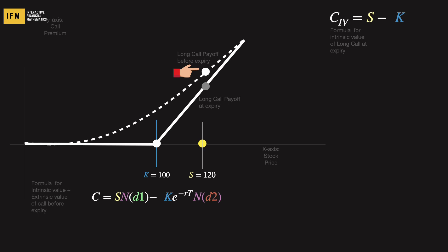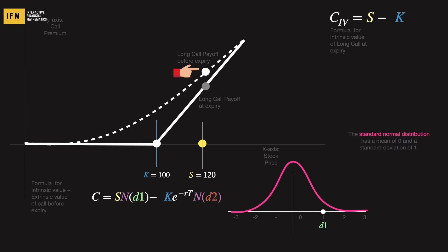To start, let's understand d1 and N(d1). For this, we need to grasp the concept of the standard normal distribution, which is a normal distribution with a mean of 0 and standard deviation of 1. First, let's plot it — draw the axis and label the standard deviations on the x-axis. The shape of the standard normal distribution resembles a bell curve. If we take a point, say d1, on the x-axis and find the corresponding value on the bell curve, we get the height of the distribution at that d1 value. The standard normal cumulative distribution function, N(d1), is given by the integral from negative infinity to d1 of the standard normal density function.